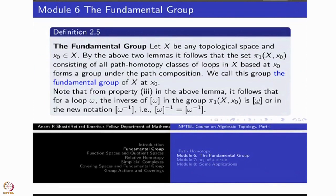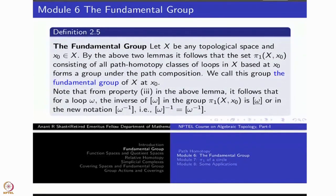Today we specialize to the case when the endpoints are the same: x₀ equals x₁. So we start with a space X and fix one base point x₀. Then we define π₁(X, x₀), which is going to be a group. This group consists of homotopy classes — specifically, path homotopy classes of loops, where a loop is a path with both endpoints at x₀.